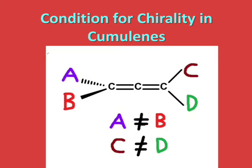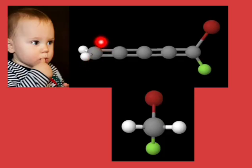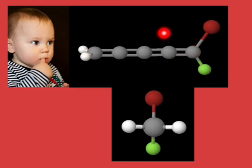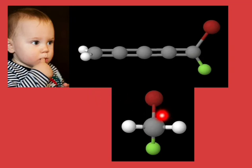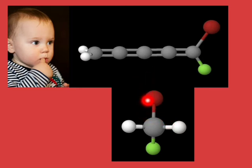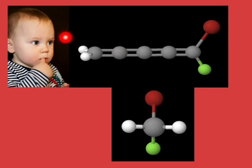Let us understand this in a much better manner with an example. Here you can see I have attached two hydrogen atoms — the white atoms — which are the same: one is coming towards you and the other is going away from you, and these two are from this boy's perspective going upwards and downwards. Accordingly, you can see that a plane can pass through this molecule, cutting the entire molecule into two equal halves. So accordingly, this molecule — although having four double bonds, that is an even number of double bonds — will become achiral because of the similar groups present on one side. The similar groups should not be present on one particular side.